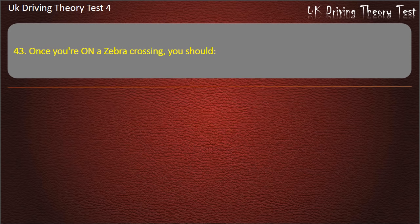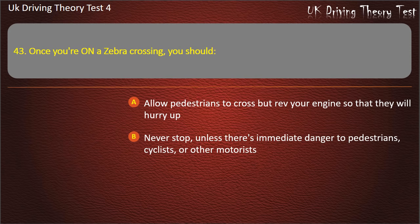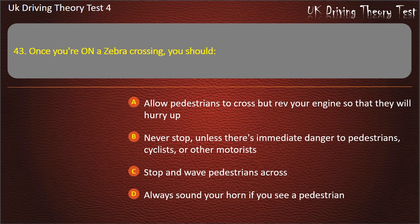Question 43. Once you're on a zebra crossing, you should: allow pedestrians to cross but rev your engine so they will hurry up; never stop unless there's immediate danger to pedestrians, cyclists, or other motorists; stop and wave pedestrians across; or always sound your horn if you see a pedestrian.